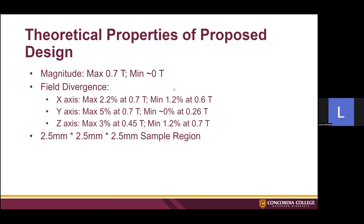What we were actually able to achieve using permanent magnets was a maximum magnitude of 0.7 Tesla and a minimum of zero. A field divergence of at maximum 2.2% on the x-axis at 0.7 Tesla, minimum 1.2% at 0.6 Tesla. On the y-axis, maximum 5% at 0.7 Tesla, minimum 0% at 0.26 Tesla. On the z-axis, maximum 3% at 0.45 Tesla, and minimum 1.2% at 0.7 Tesla. We also found it's not possible to get the sample size we wanted — 2.5 millimeters is the biggest sample region we can use with permanent magnets.